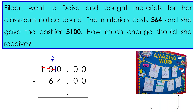Now, we can do the subtraction. 0 minus 0 is 0. 0 minus 0 is 0. 10 dollars minus 4 dollars is 6 dollars. Finally, 9 tens minus 6 tens equals 3 tens. The final answer is $36.